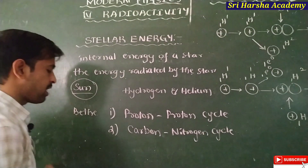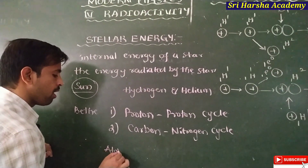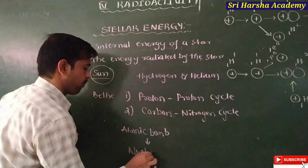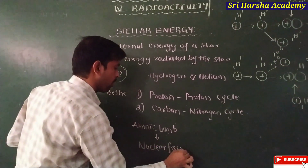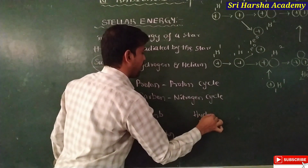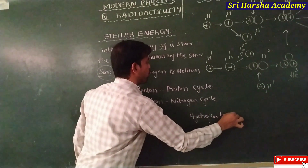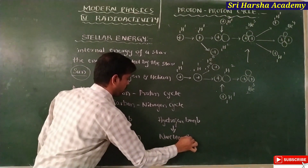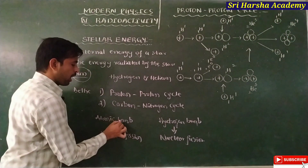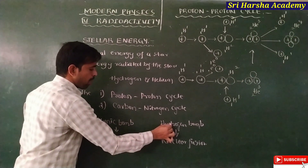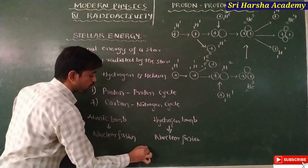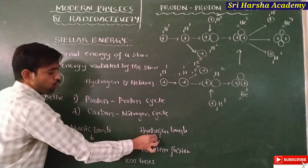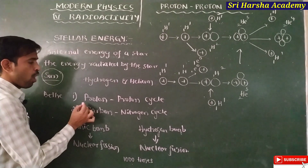One main example is the atomic bomb, which is an example of nuclear fission. The hydrogen bomb is an example of nuclear fusion. Compared to the atomic bomb, the hydrogen bomb is a thousand times more powerful — it consists of much greater explosive power than the atomic bomb.